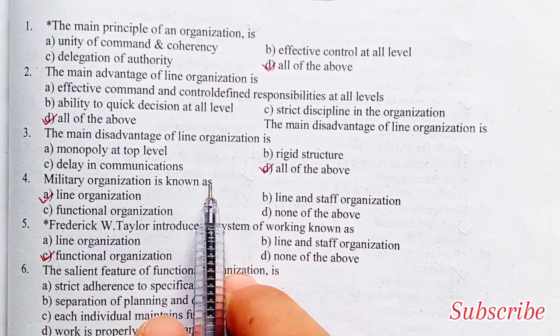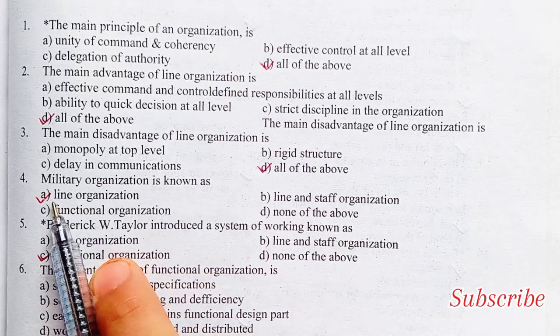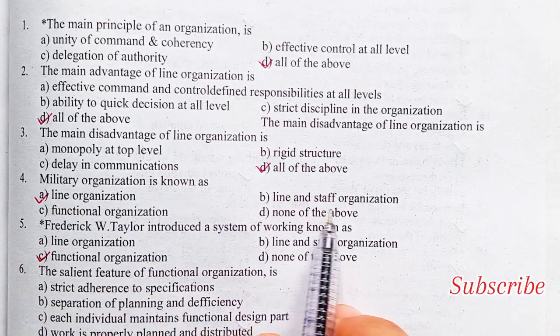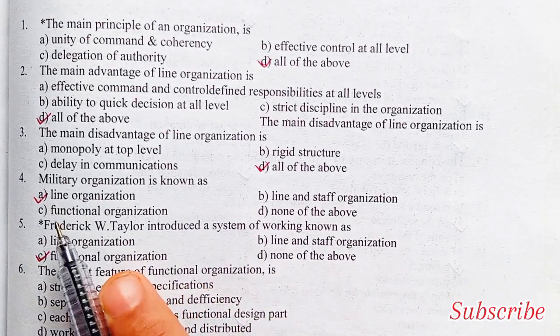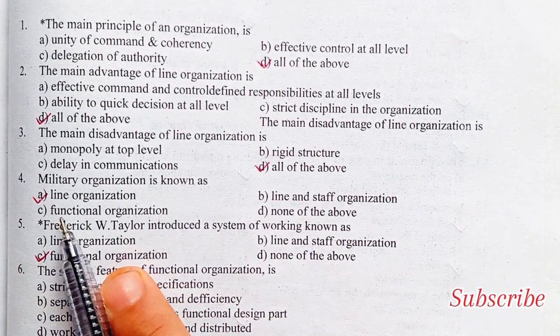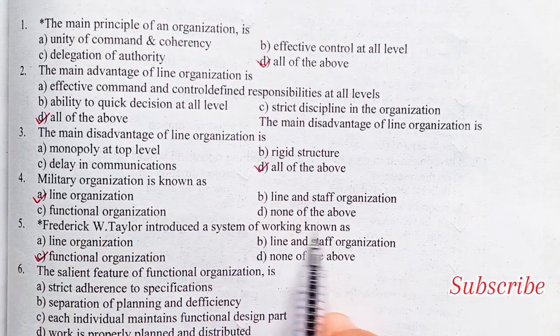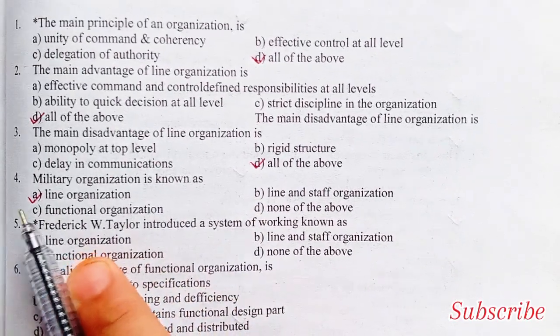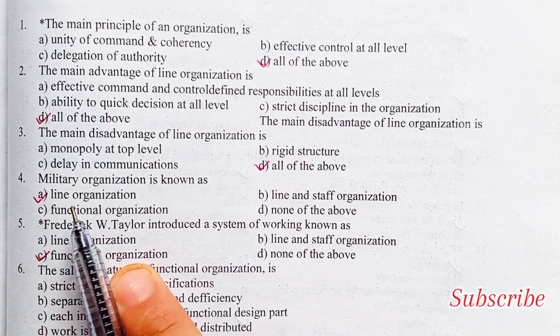The military organization is known as line organization, line and staff organization, functional organization, or none of the above. The answer is line organization.